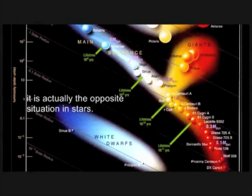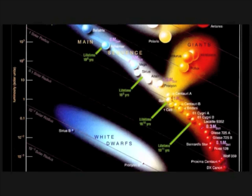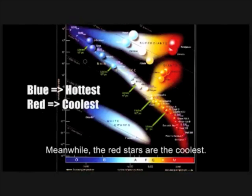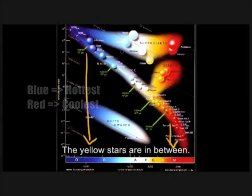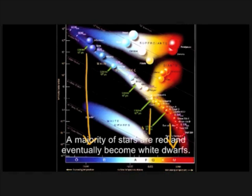Though blue is assumed to be cold and red hot, it is actually the opposite situation in stars. Blue stars are considered to be the hottest, meanwhile the red stars are the coolest. And yellow stars are in between.